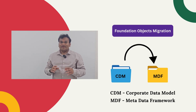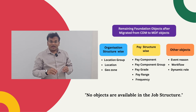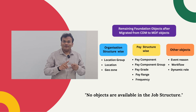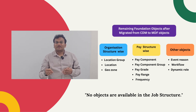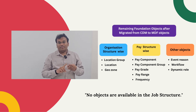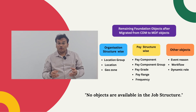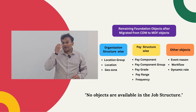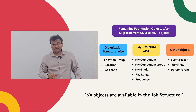Currently, the corporate data model retains only a few objects. Organization-wise: location group, location, and zone. Pay structure-wise: pay component, pay component group, pay grade, pay range, and frequency. Job classification and job functions are no longer available in the corporate data model.